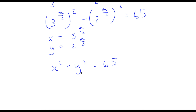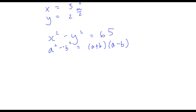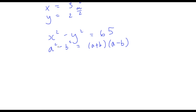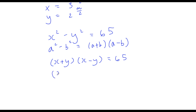Now let's go ahead and solve this. If we have something in the form a squared minus b squared, this equals a plus b times a minus b. So x squared minus y squared is the same thing as x plus y times x minus y, equal to 65. Now 65 is the same thing as 13 times 5, so we have x plus y times x minus y equal to 13 times 5.